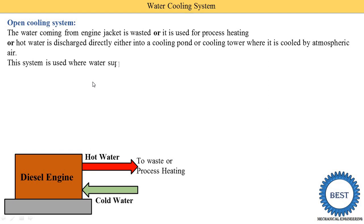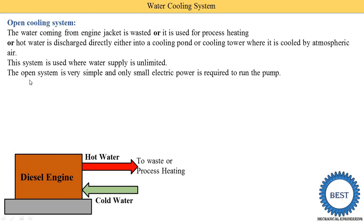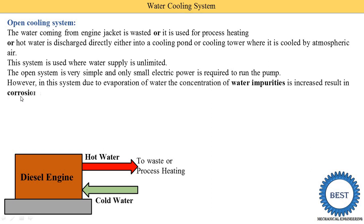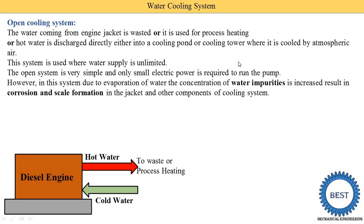This system is used where water supply is unlimited, meaning where the water source is continuously available. The open system is very simple and only a small electric power is required to run the pump. However, in this system due to evaporation of water the concentration of water impurities increases, and during this evaporation of water, impurities increase inside the engine. This results in corrosion and scale formation in the jacket — inside the engine the water jacket starts to corrode and scale forms because normal water is used.